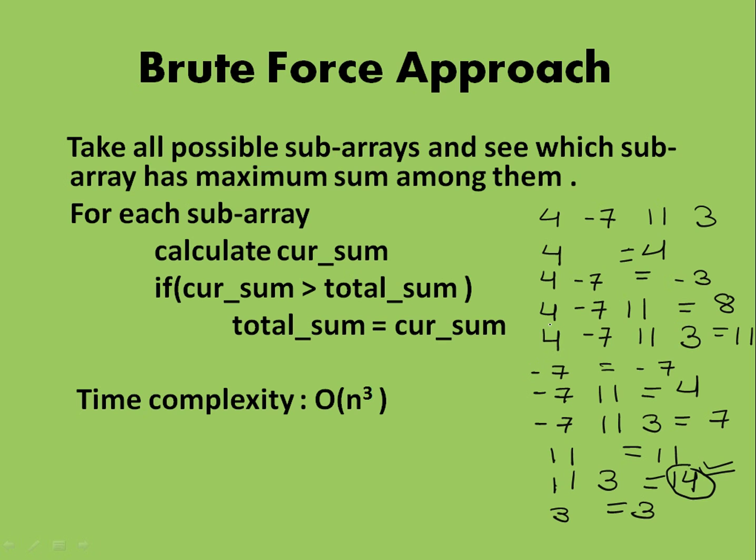For doing this work we're fixing an element. For this 4, I'm fixing one other element also, like here 4, then minus 7, 11, then 3. So this fixing is n squared thing, because first I'll fix them for 4, then for minus 7, then for 11, and then 3. So it's an n squared thing.